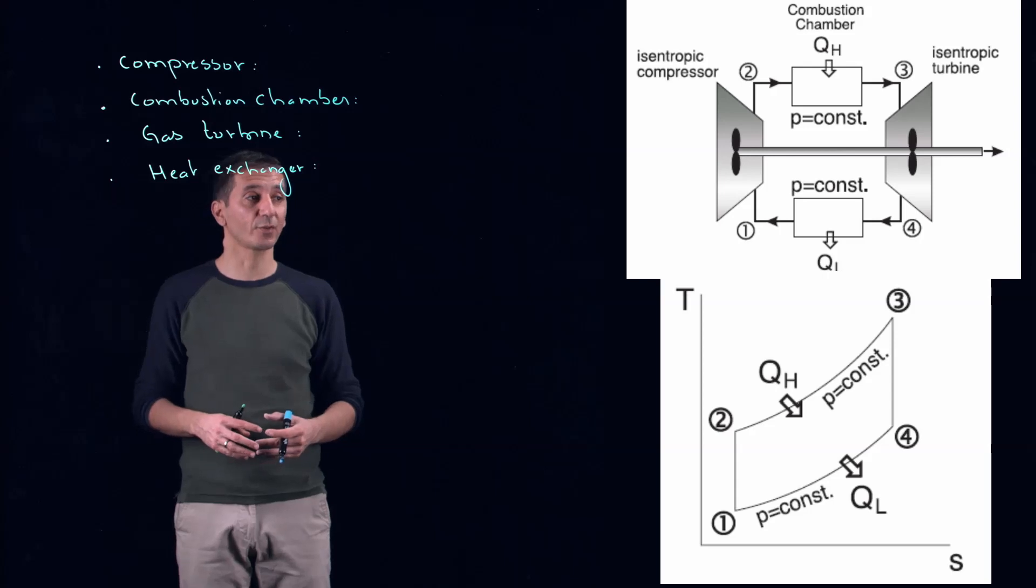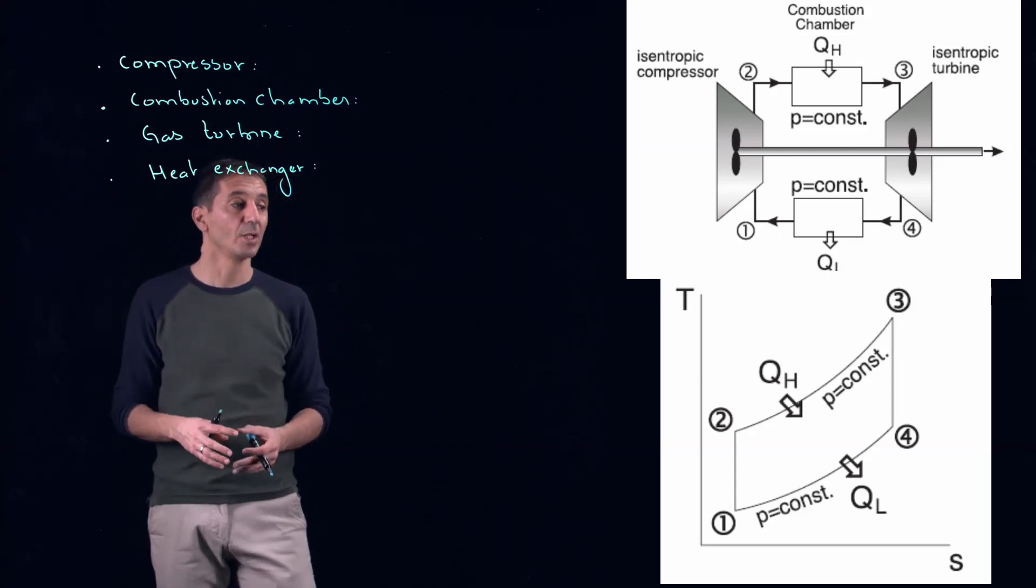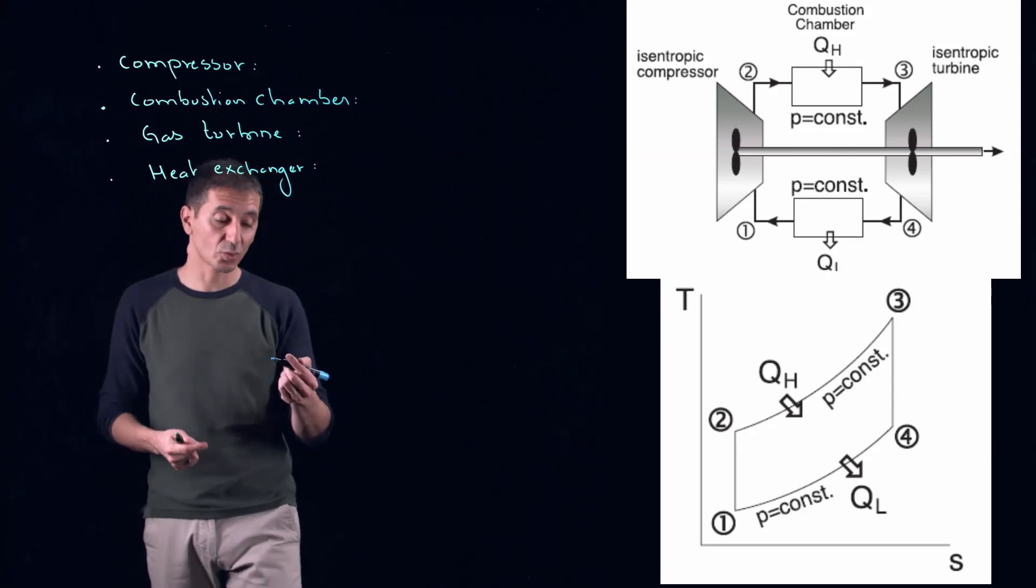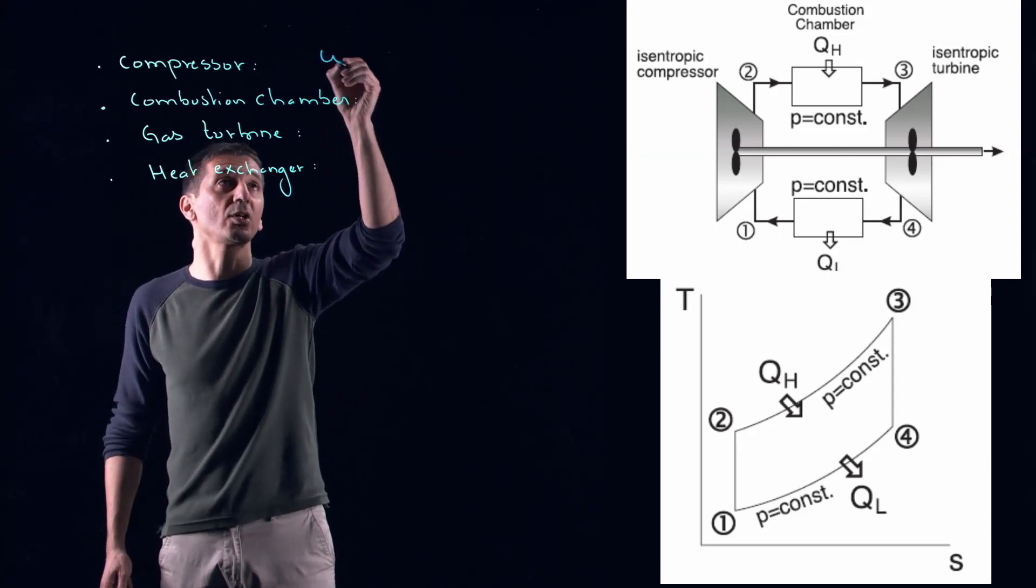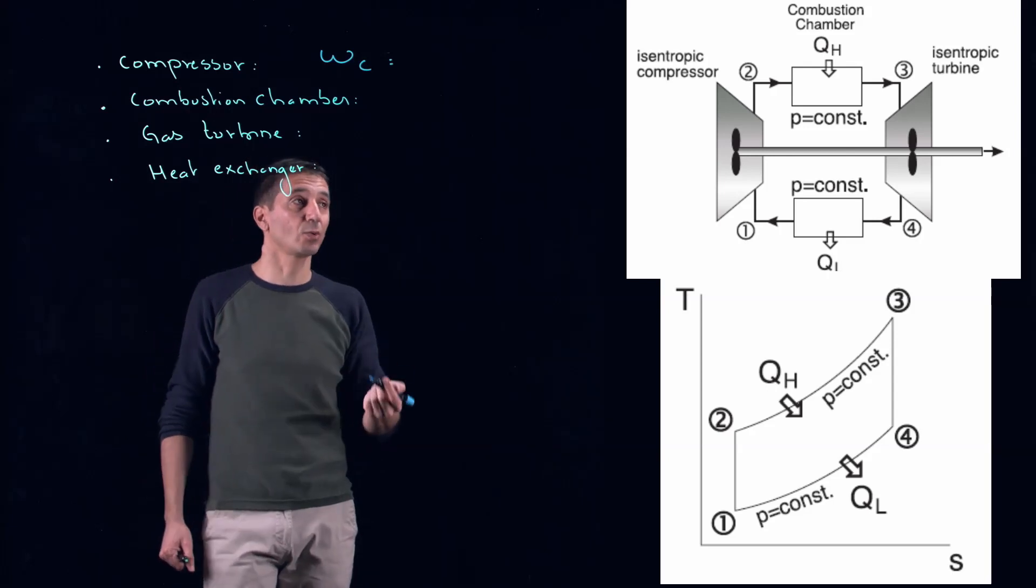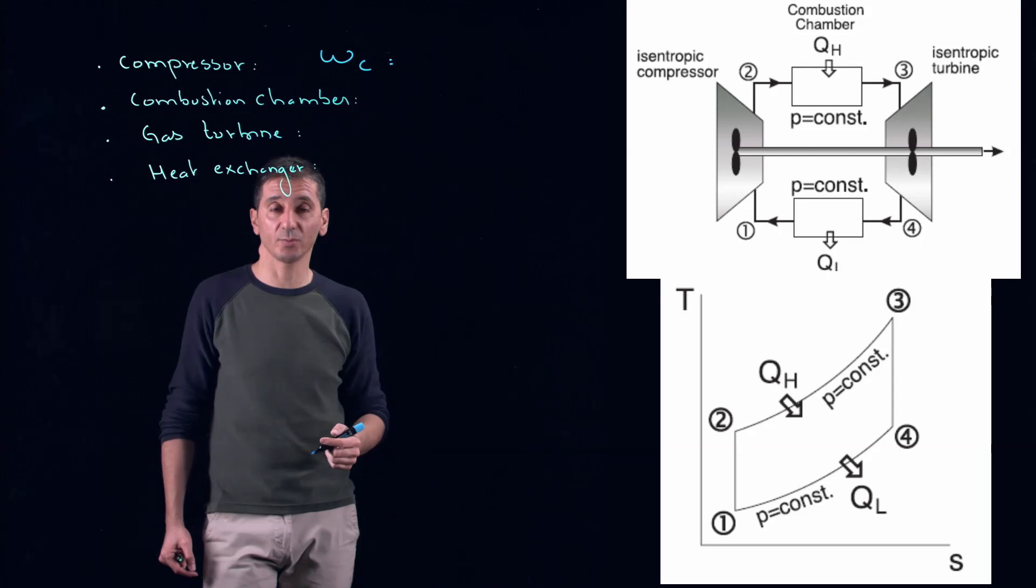If you apply the first law of thermodynamics, obviously here, this is the most compact form, where we are neglecting the variations in kinetic energy and potential energy, and we are assuming a steady state. So, we can write that the work of the compressor will be equal to what? It will be equal to the difference in enthalpy, H1 minus H2.